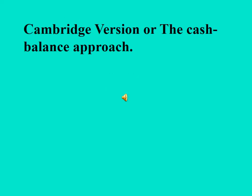Next is the Cambridge version of the cash balance approach. It is the modified form of the transaction approach. All the shortcomings of the transaction approach are cleared or modified by this second version, called the Cambridge version.